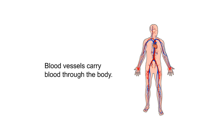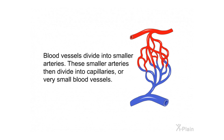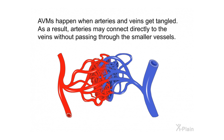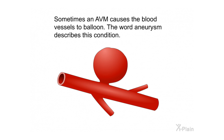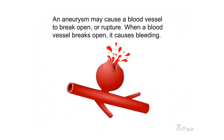Blood vessels carry blood through the body. Blood vessels divide into smaller arteries, which then divide into capillaries — very small blood vessels. AVMs happen when arteries and veins get tangled. As a result, arteries may connect directly to the veins without passing through the smaller vessels. Sometimes an AVM causes the blood vessels to balloon; this condition is called an aneurysm. An aneurysm may cause a blood vessel to break open or rupture, causing bleeding.